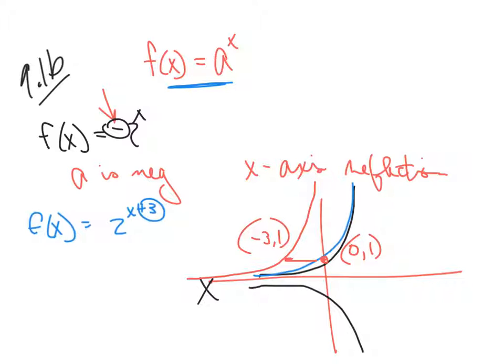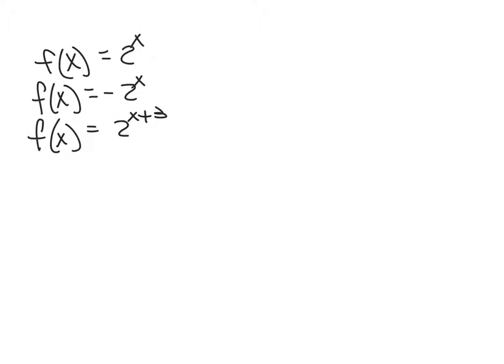It's shifted over 3 units. So that's what that plus 3 does, is it shifts it to the left 3. Now if that were a negative 3, it would shift it to the right 3. Let's see what else we can come up with.